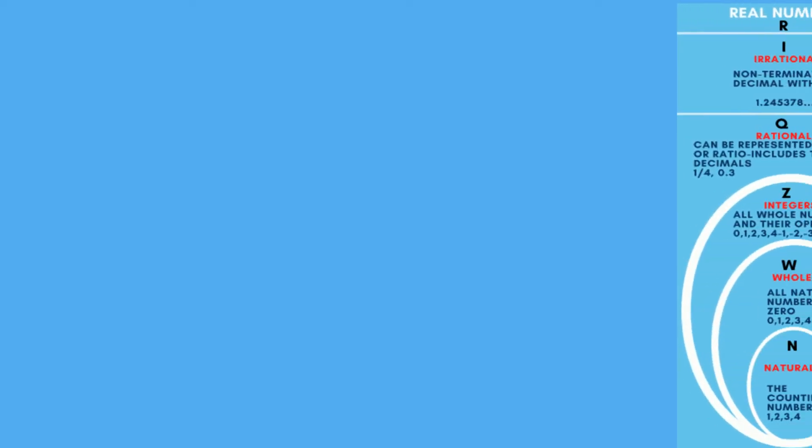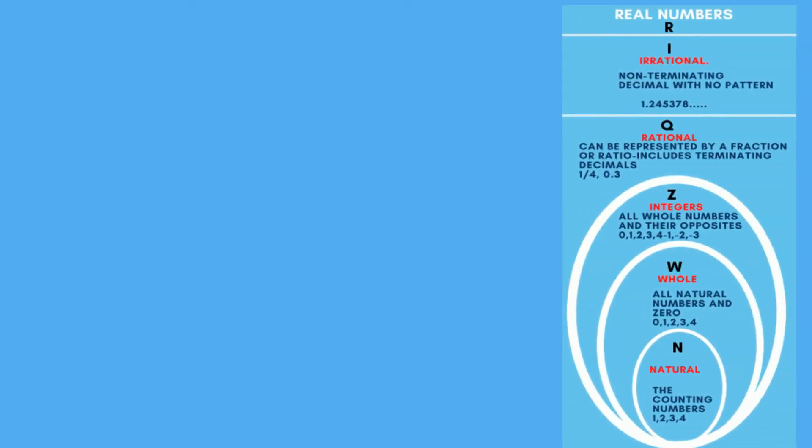This diagram outlines real numbers. In the middle are natural numbers, which include the counting numbers. Natural numbers are represented by an N.